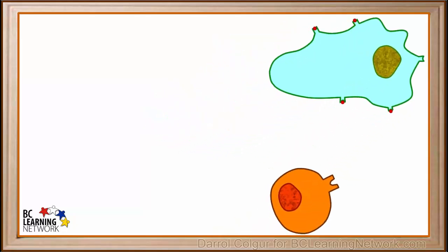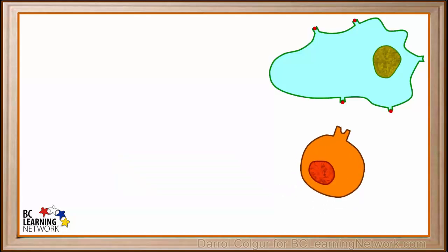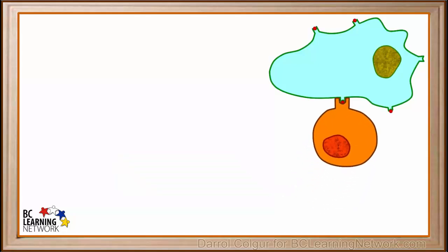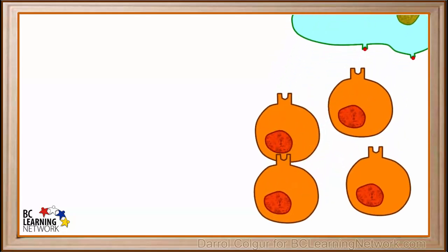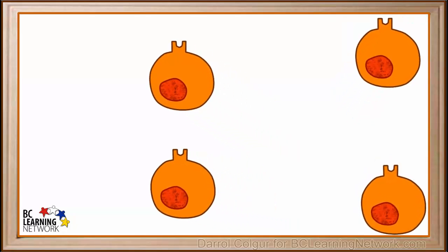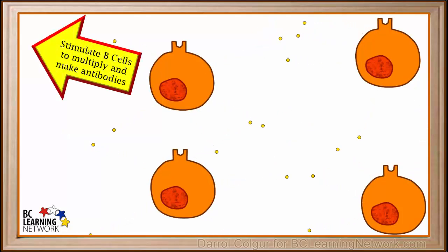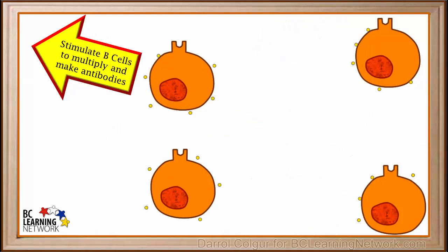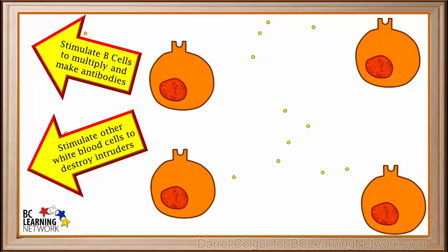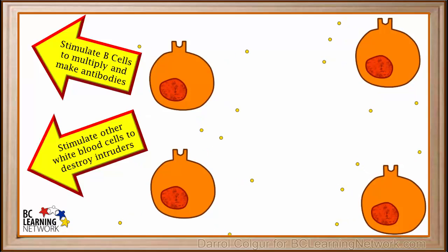We'll watch as a helper T cell comes toward this cell and attaches itself to it. The presence of the antigen causes this T cell to be activated and make identical clones or copies of itself. When activated, these helper T cells release chemical signals. These chemical signals stimulate B cells to clone copies of themselves and produce large numbers of antibodies to fight intruders. They also stimulate other white blood cells, like macrophages, to engulf and destroy intruding cells.